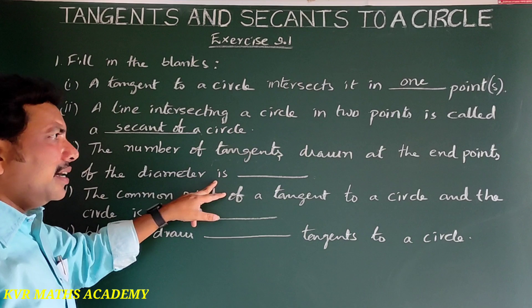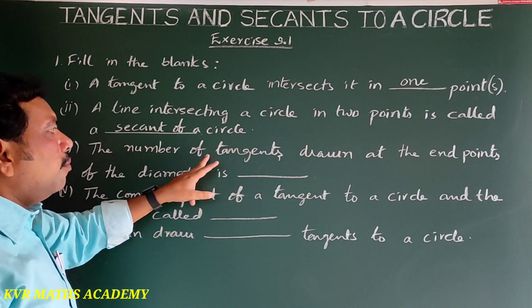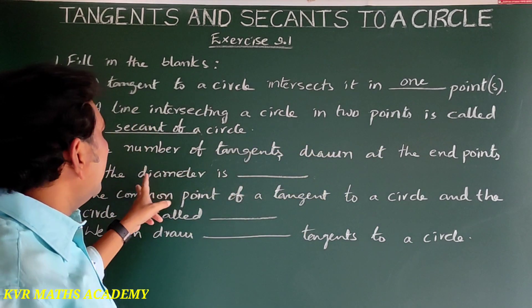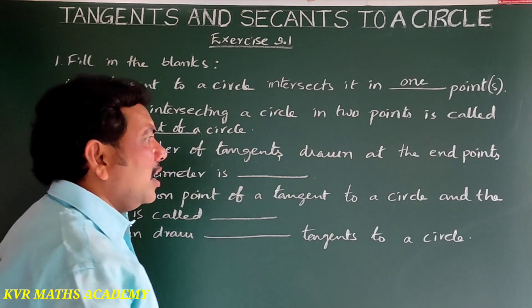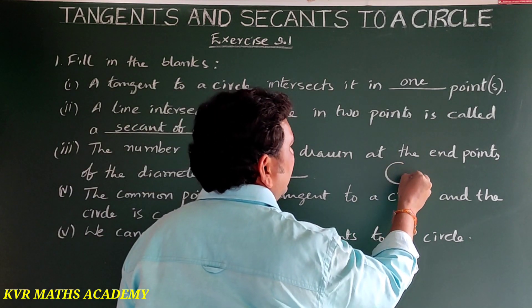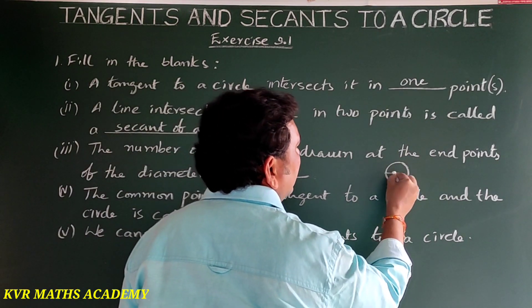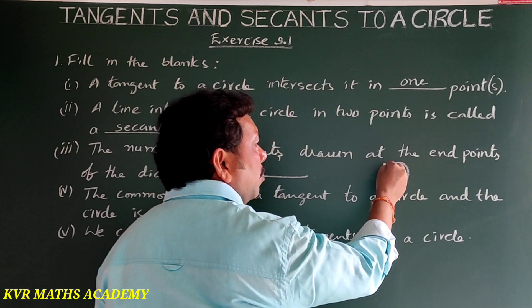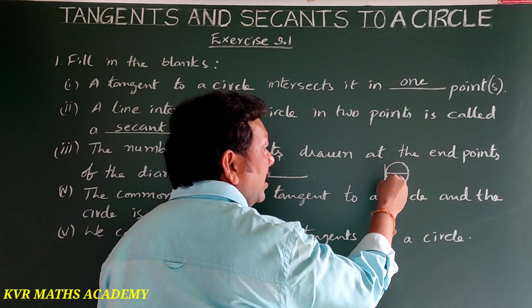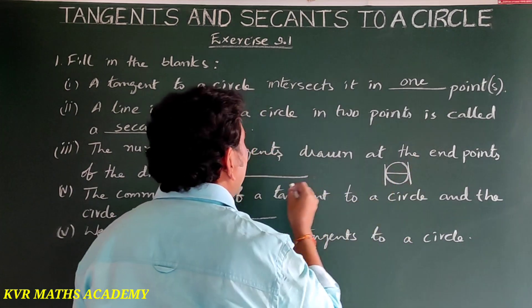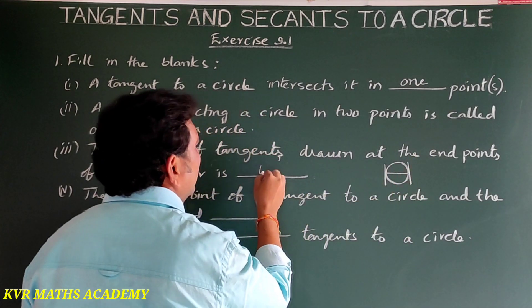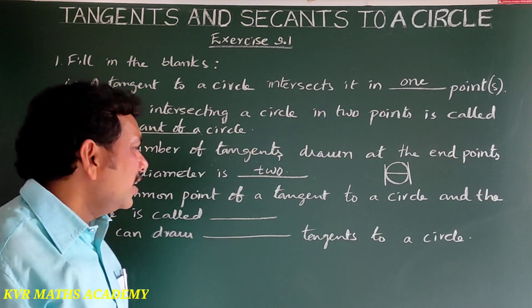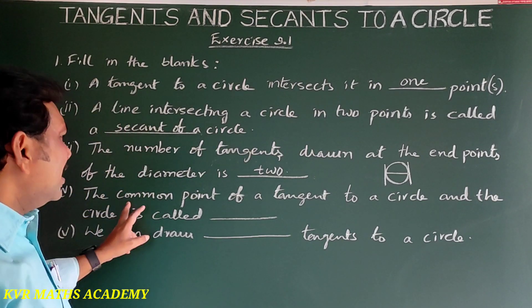Next: the number of tangents drawn at the end points of the diameter. Suppose this is a circle and this is the diameter — how many tangents can we draw to the end points of the diameter? This one and another one, so the answer is two.